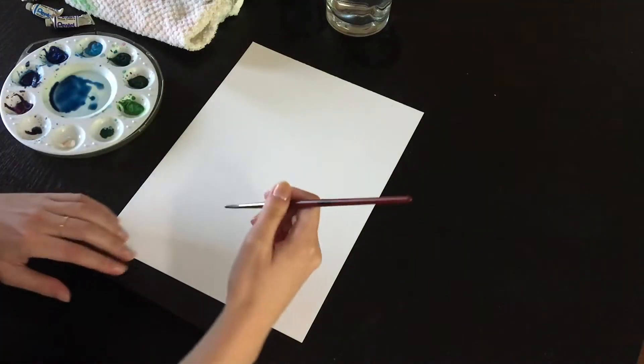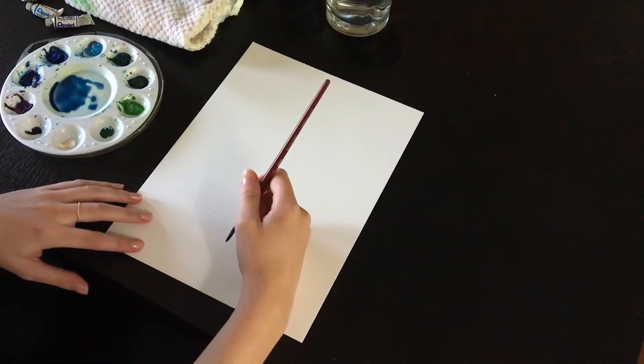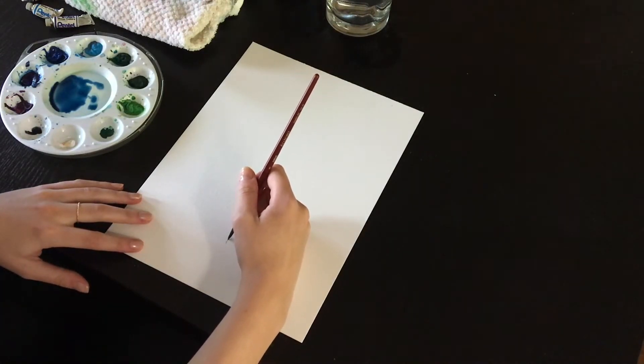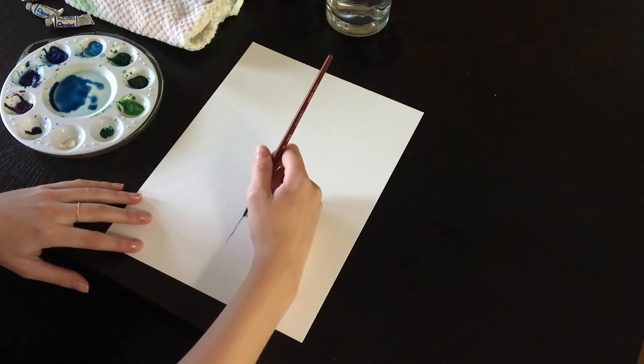To begin, start by sketching in the stems of your flower. Mix some water with your paint but not too much water. You want it to be dark and draw the stems in smooth long strokes.